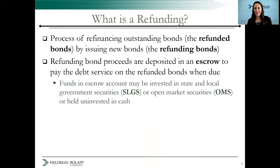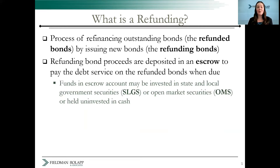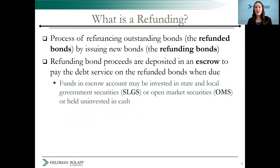So what is a refunding? A refunding is the process whereby a bond issuer refinances outstanding bonds by issuing new bonds. The prior bonds are called the refunded bonds, and the new bonds are called the refunding bonds. The proceeds of the refunding bonds are deposited into an escrow account that pays the debt service on the refunded bonds when that becomes due. These funds in the escrow account can be invested so that earnings minimize the costs of the escrow. The most common investments are state and local government securities, endearingly called SLUGs, or open market securities such as T-bills.